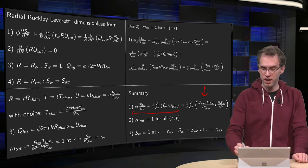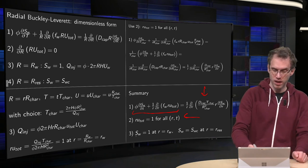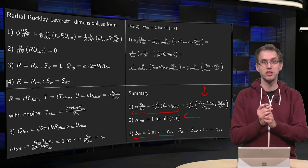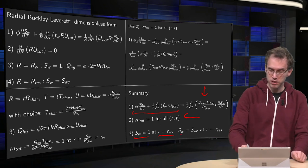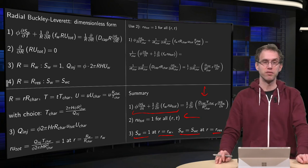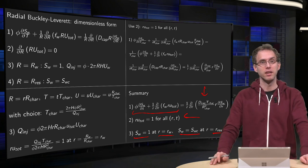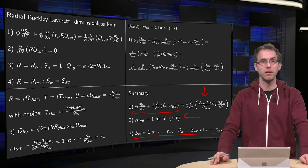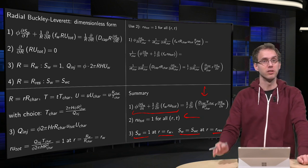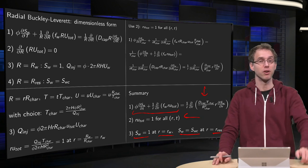So, all the constants are now in your Peclet number from the first equation. The second equation becomes really nice. R-u total is just equal to 1. And boundary conditions: SW equals 1 at r equals R-w, the dimensionless well radius. And SW equals S-initial at the dimensionless reservoir radius. So, here we have the dimensionless form of our radial Buckley-Leverett problem, where you are still free to choose your characteristic scale as suited for your own problem.